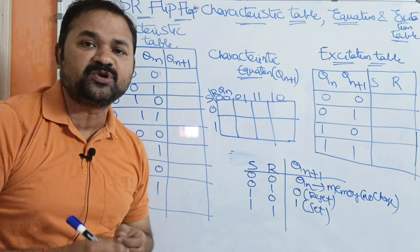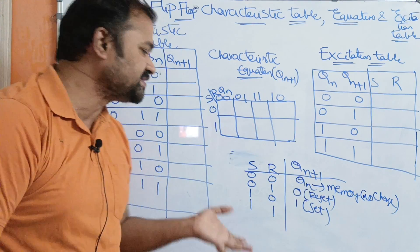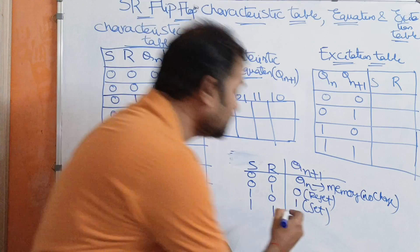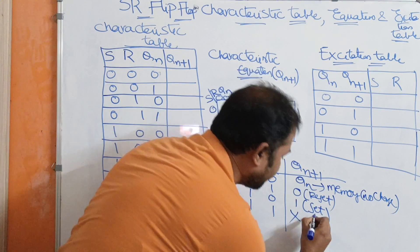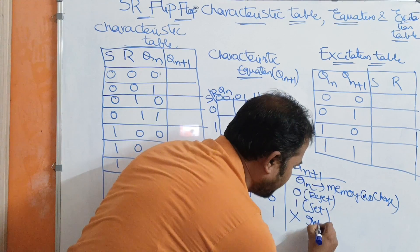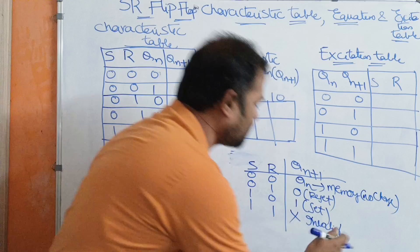Next, if the inputs are 11, then the output is invalid — invalid means don't care. We never use this combination.